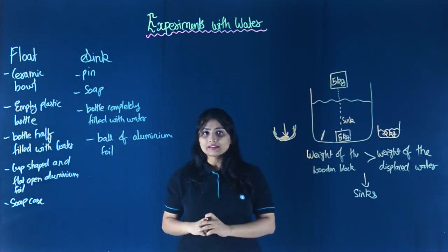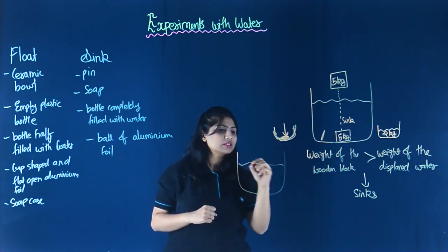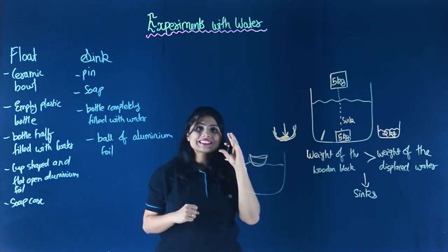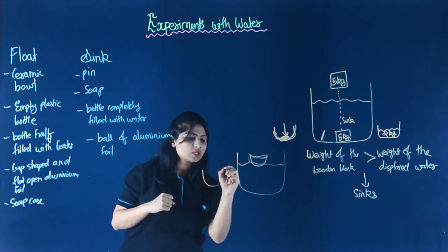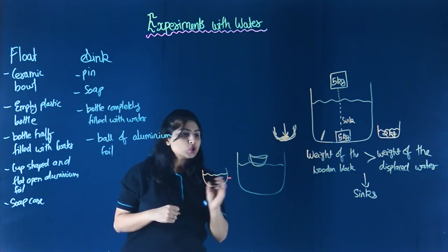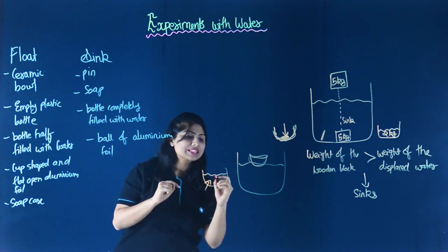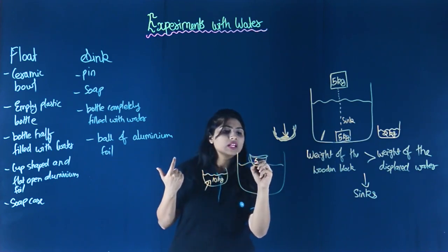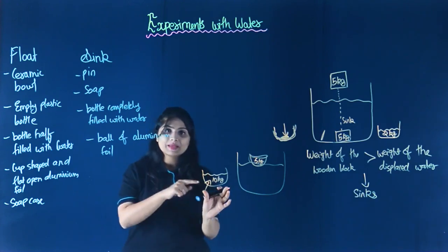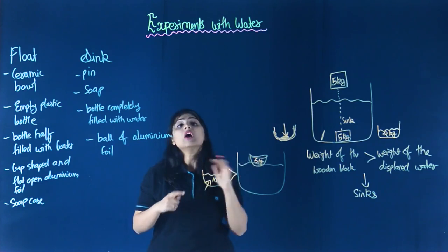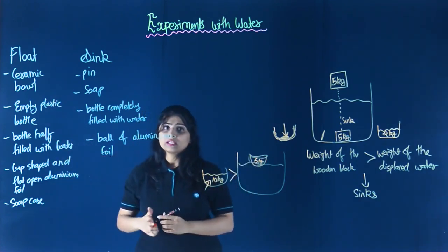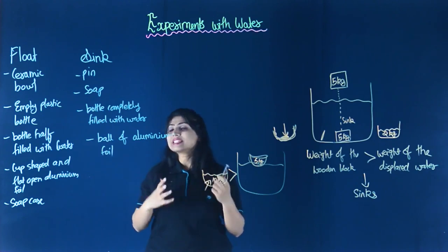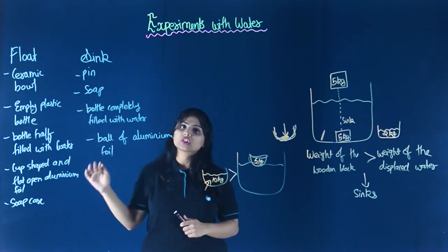Whereas when we talk about the ceramic bowl — if we put the ceramic bowl in water, the bowl is floating. The reason is the bowl is displacing some amount of water. Suppose it has displaced this much water, and the weight of that water is 10 kg, while the weight of the bowl is 5 kg. The weight of the displaced water is more than the weight of the bowl, due to which the bowl floats. The same goes for everything that floats — the amount of water displaced has more mass, or more weight, than the objects themselves.